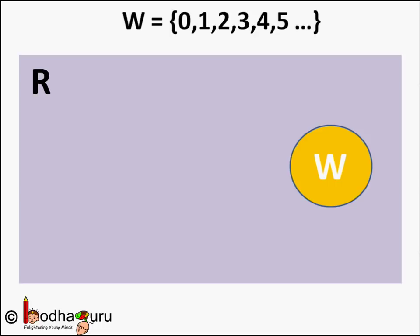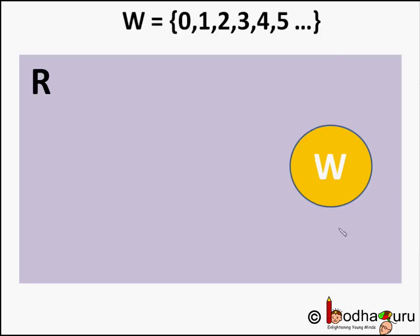It is the best way to visualize the relationship between the sets. So this set of real numbers R which has a set of whole numbers W is represented like this: a big rectangle representing universal set R containing a circle W representing the set of whole numbers.